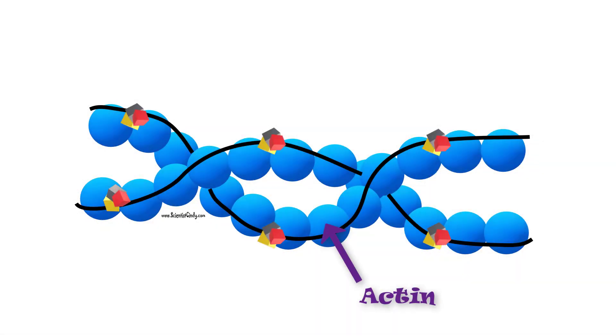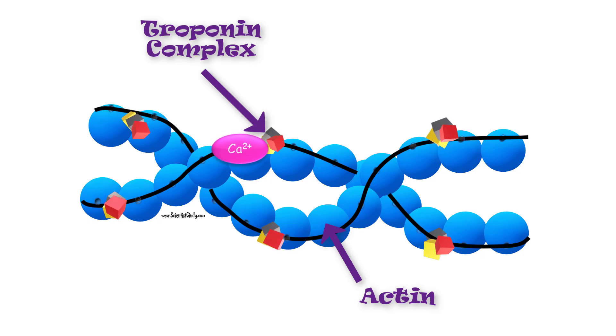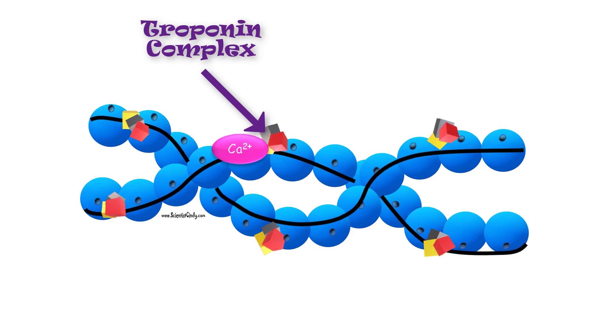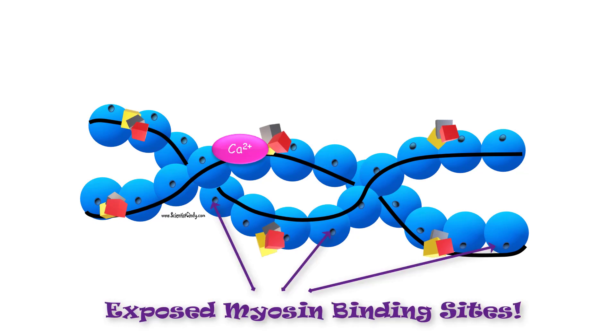When calcium is in the sarcoplasm, it binds to troponin. When calcium binds to troponin, troponin undergoes a conformational change, which pulls tropomyosin off of the myosin binding site.